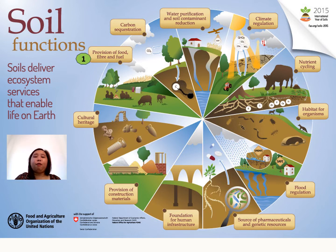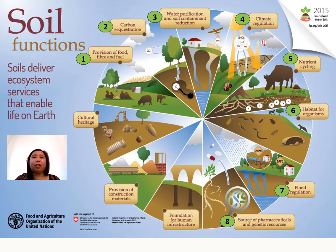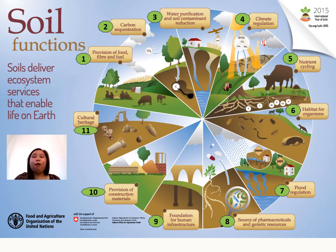One is the provision of food, fiber, and fuel. Another is for carbon sequestration. Number three is water purification and salt contamination reduction. Number four is for climate regulation. Another function is nutrient cycling. Number six is habitat for organisms. Number seven is flood regulation. Number eight is source of pharmaceuticals and genetic resources. Number nine is foundation of human infrastructure. Number ten is the provision of construction materials. And last but not least is for cultural heritage.